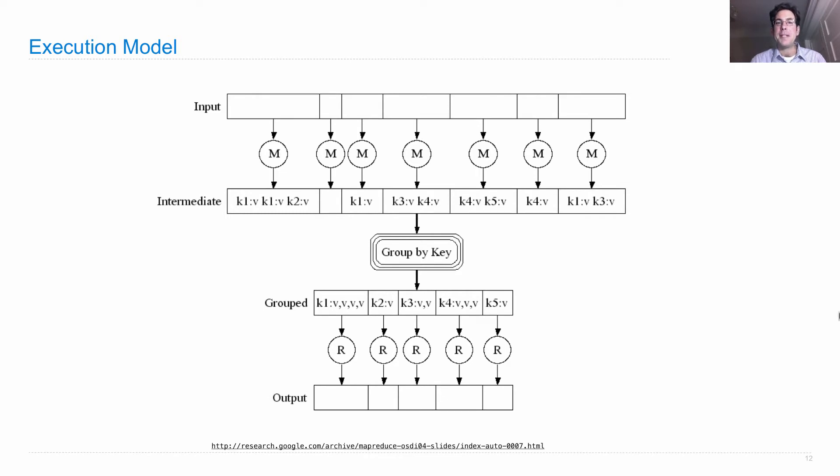Now the reason that each mapper and reducer is represented as a separate circle is to indicate not that it does a different thing, but that it could run independently of all the other mappers and reducers.